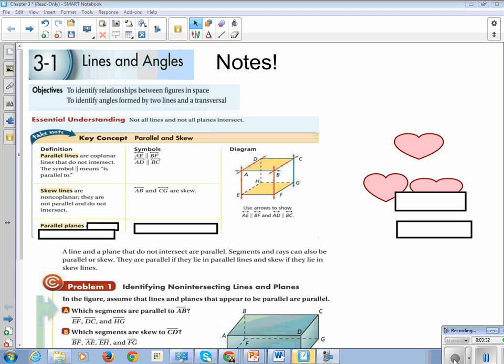Parallel planes are the top and bottom planes of our figures. They are, thankfully, just as they sound. They are planes that do not intersect. How many letters do we need to identify a plane? Although they're using four, just so we can be more specific. Four or three is fine. So in this case, plane ABCE is parallel to plane EFGH. A line and a plane that do not intersect are parallel. Segments and rays can also be parallel or skew. They are parallel if they lie in parallel lines and skew if they lie in skew lines.